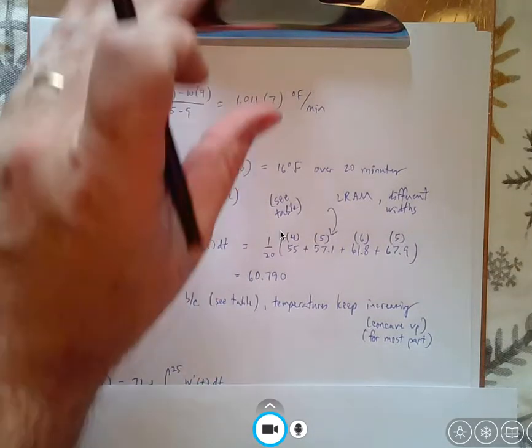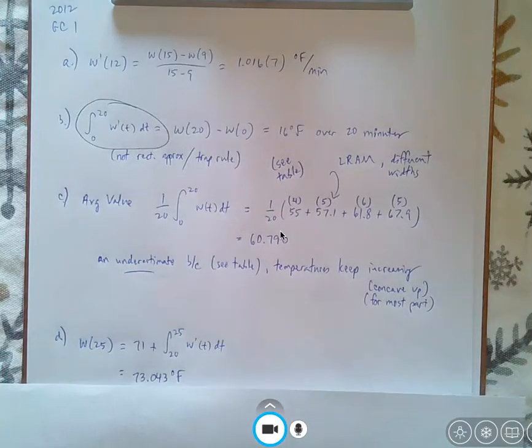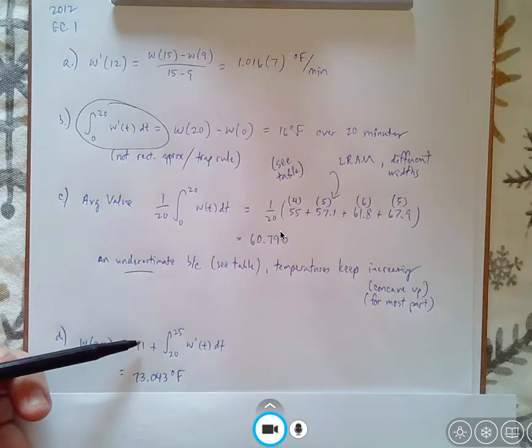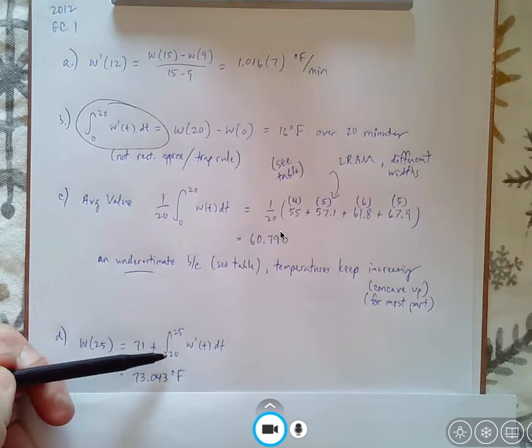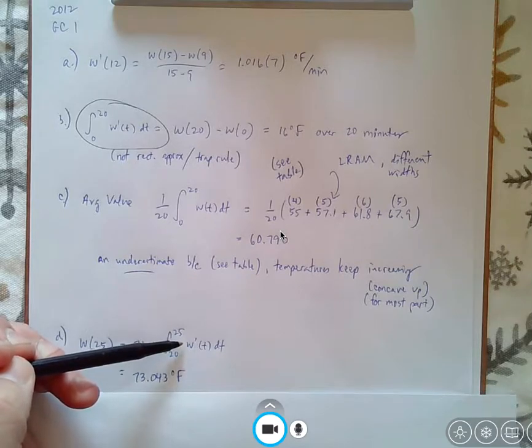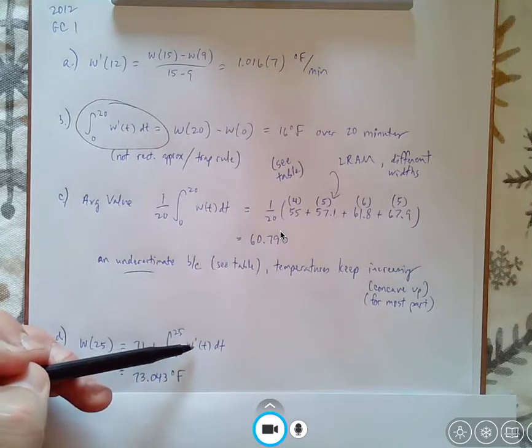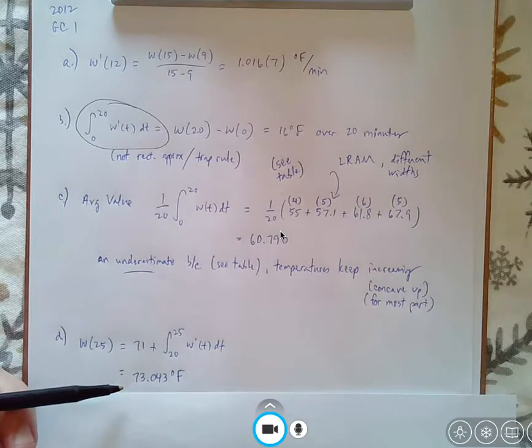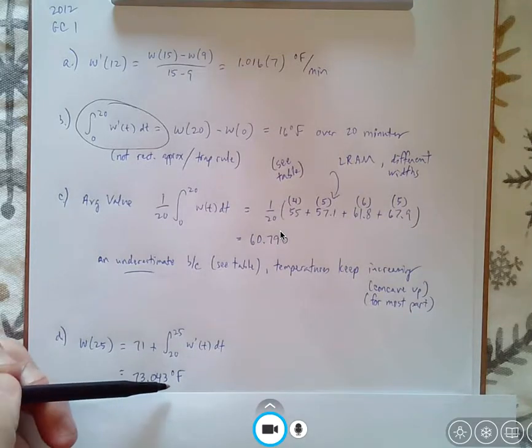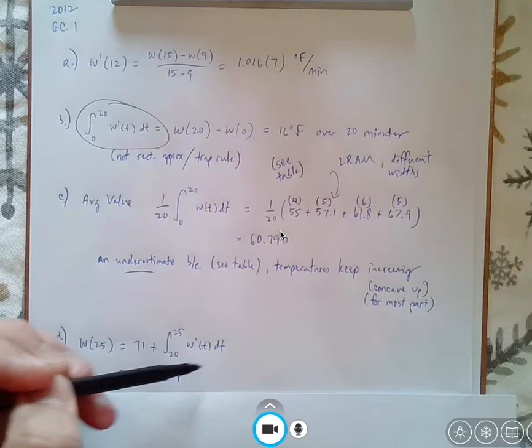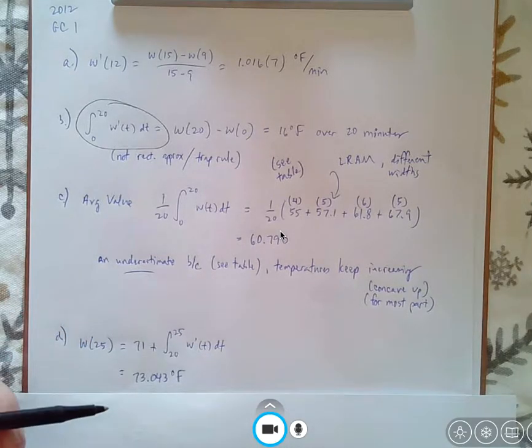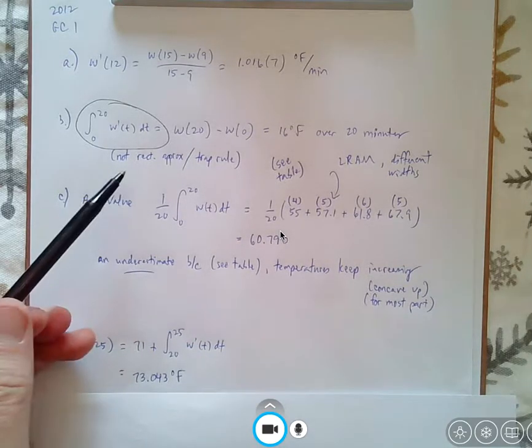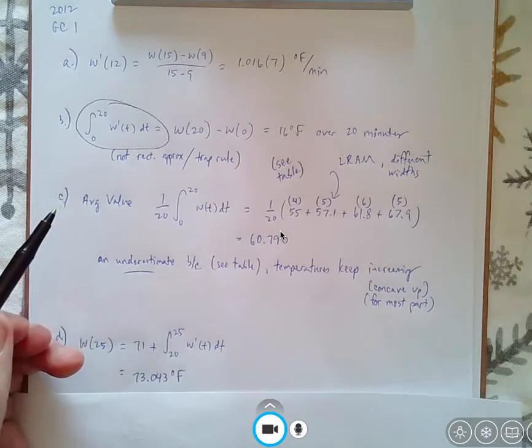And question D is really a straight calculator question. I know that at time 20, the temperature is 71 degrees. The change of temperature from time 20 to 25 would be an integral, which you plug in. You plug in W'(t), whatever that special function is, and it's in the question. And if you type it all out, you get a temperature of 73.043 because the change of temperature is like 2.04 degrees. That's a good question. This was a good question from 2012, and I think my kids did all right with it.